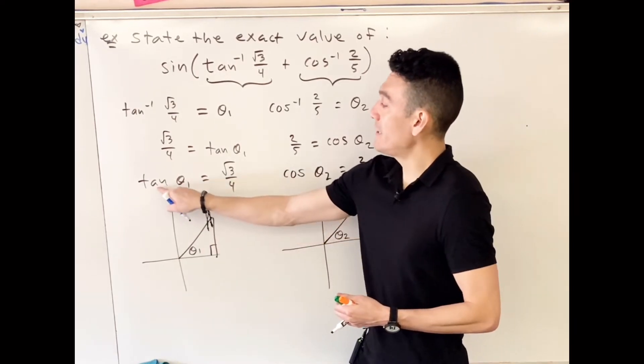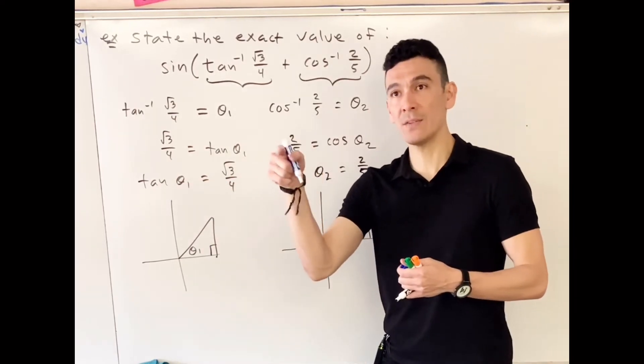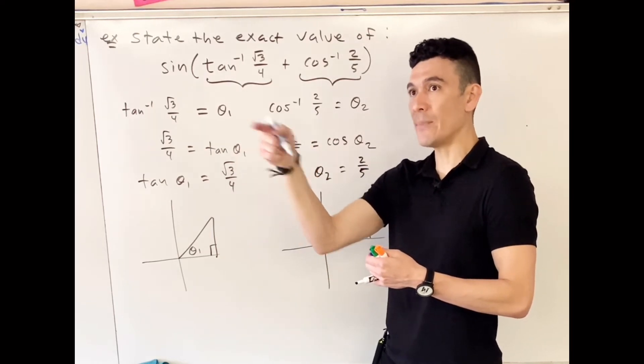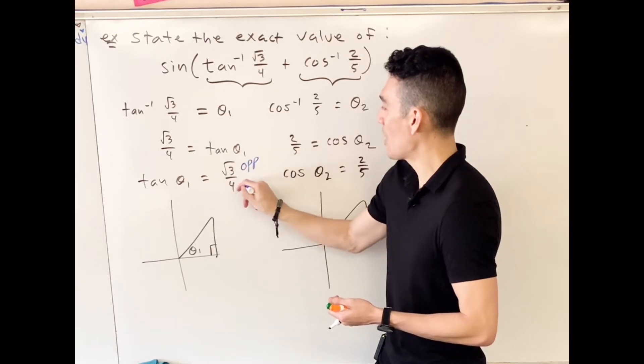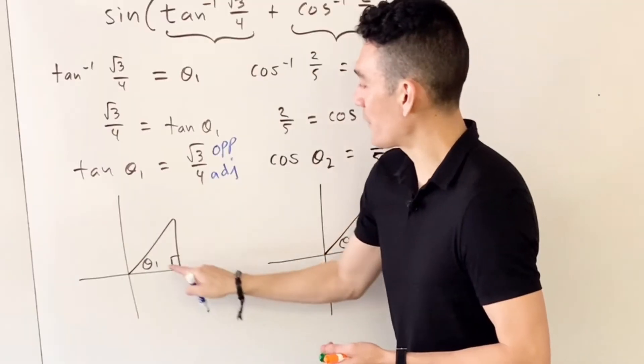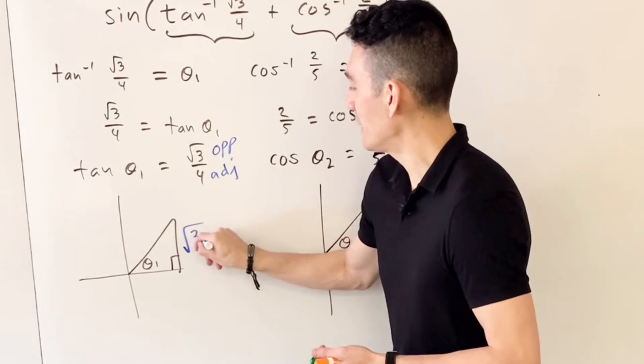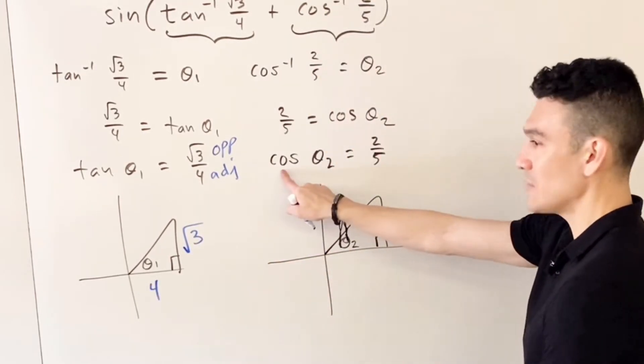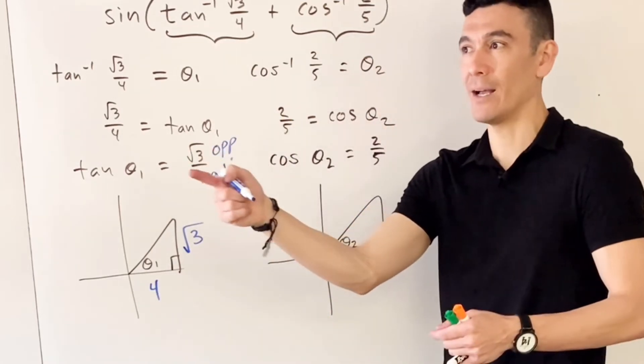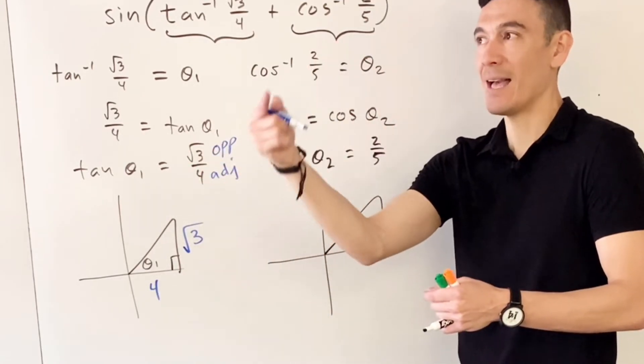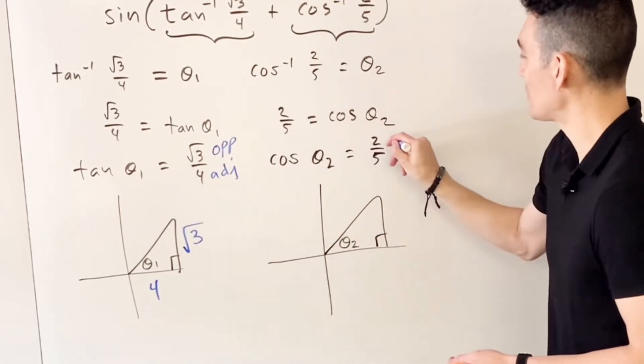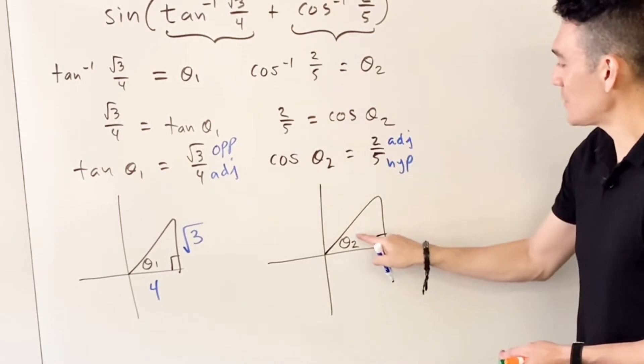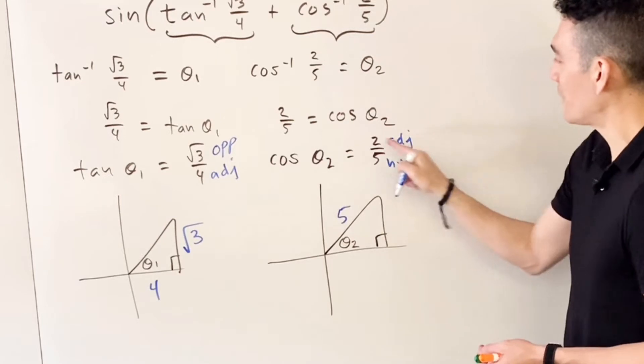Looking at theta one, tangent is SOH CAH TOA—tangent is opposite over adjacent. So from here, the opposite is that and the adjacent is that. Over here, cosine—cosine is CAH, adjacent over hypotenuse. So this is adjacent over hypotenuse; the hypotenuse is 5 but the adjacent is 2.